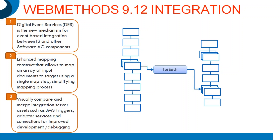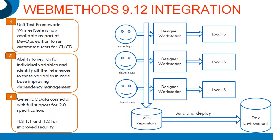There are some additional features for developers. The test framework called WM Test Suite is now available as a product — officially supported by WebMethods and made available through the Software AG installer. This will allow developers to run automated unit tests for continuous development and continuous integration. From the DevOps perspective, WebMethods is also providing the facility of a local installation of Integration Server, coming more as an integrated product from the DevOps perspective. Developers with their local installation will connect to a VCS repository and take care of continuous integration and continuous development to build and deploy to the real dev environment.